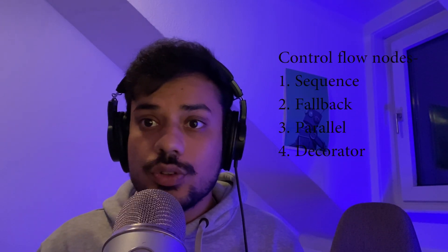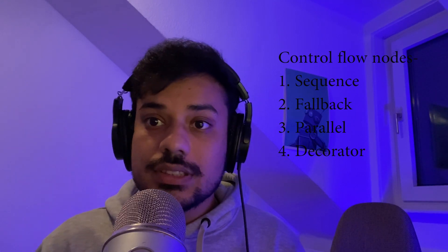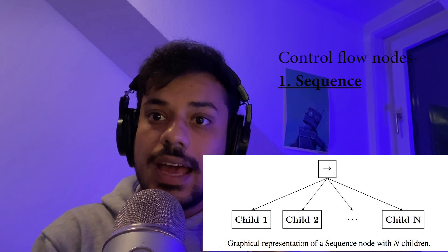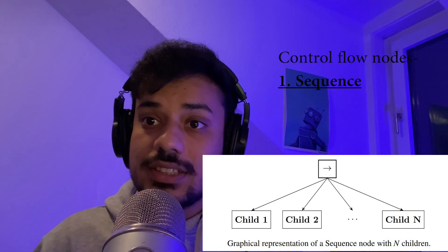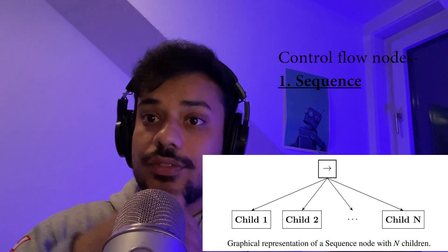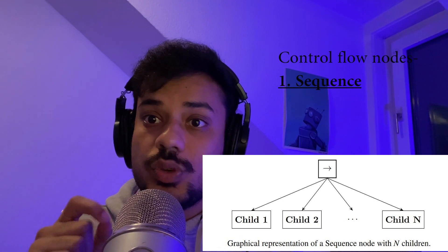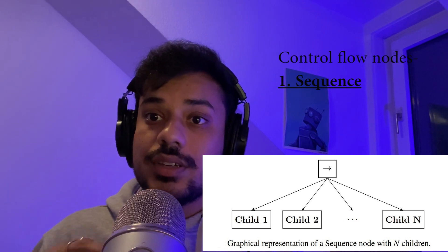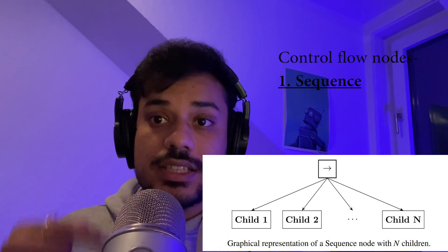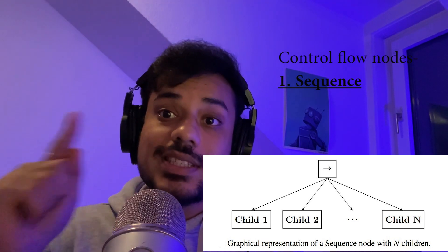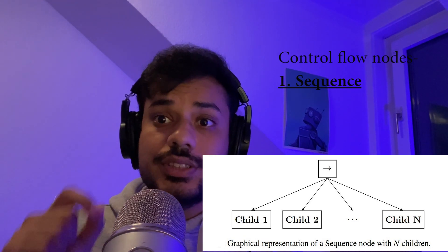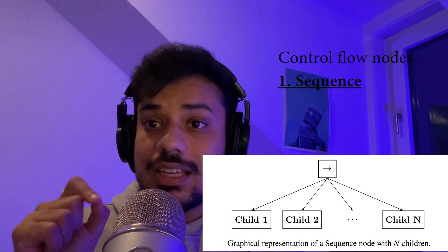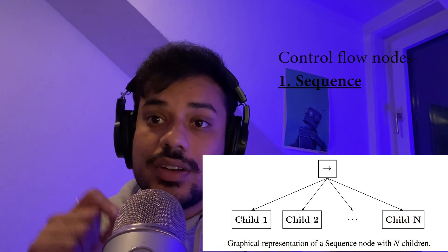There exist four different categories of control flow nodes: sequence, fallback, parallel, and decorators. A behavior tree starts its execution from the root node using something called a tick — a nudge to a node where it starts functioning, propagated from left to right. A node is only executed if it is ticked. A sequence node ticks its children from left to right, but stops if a child returns running or failure. It requires all children to return success before it returns success to its parent.